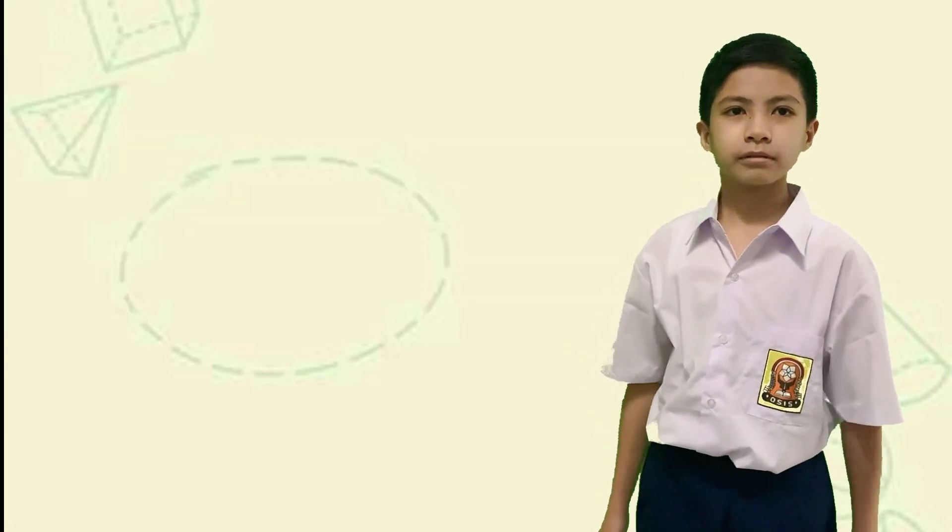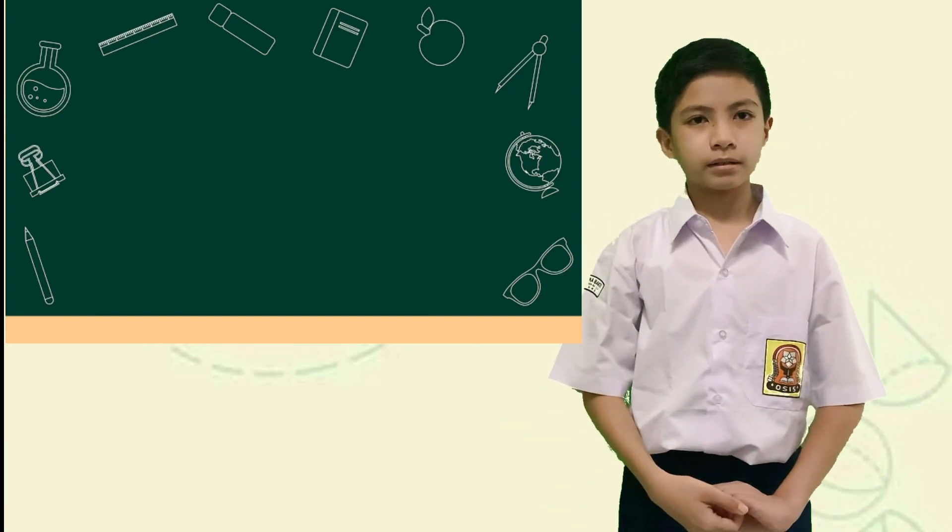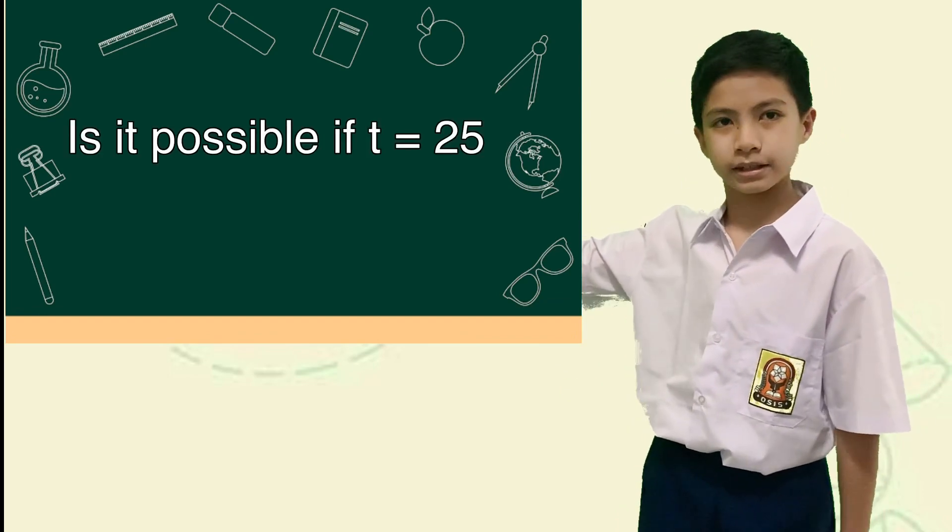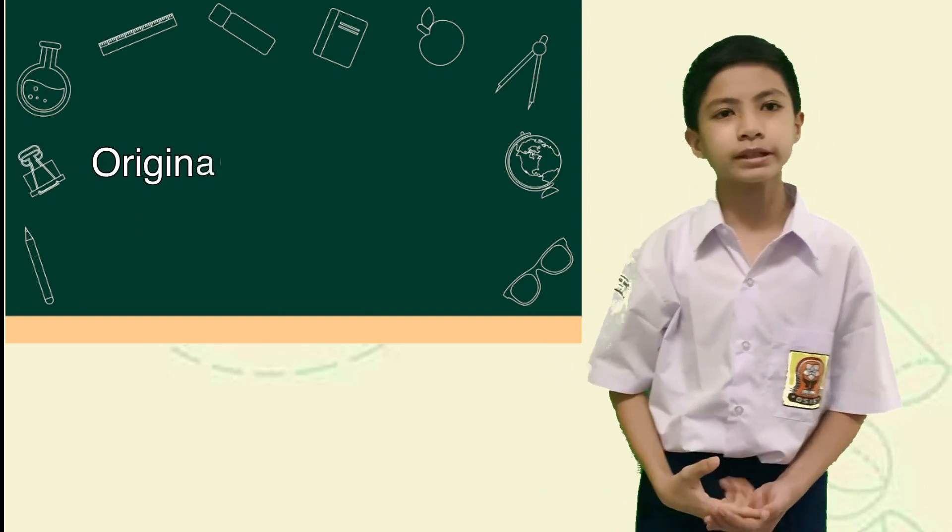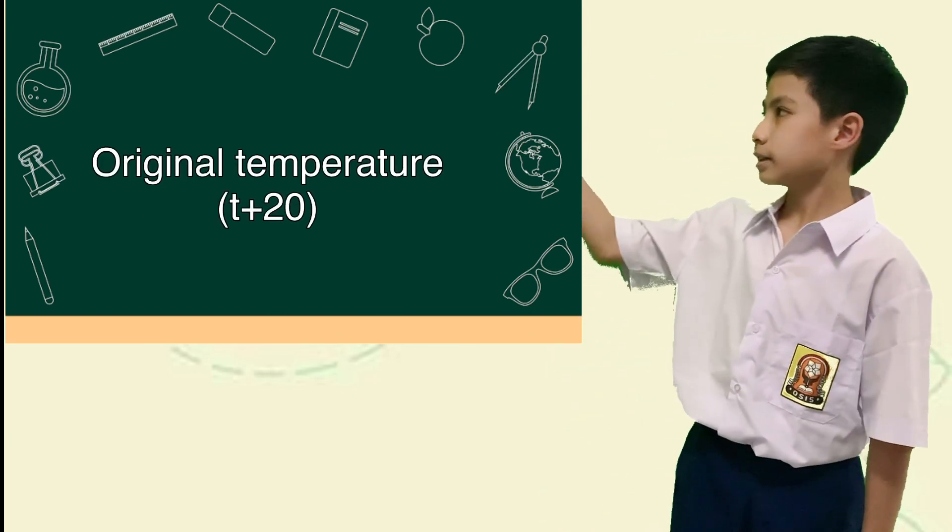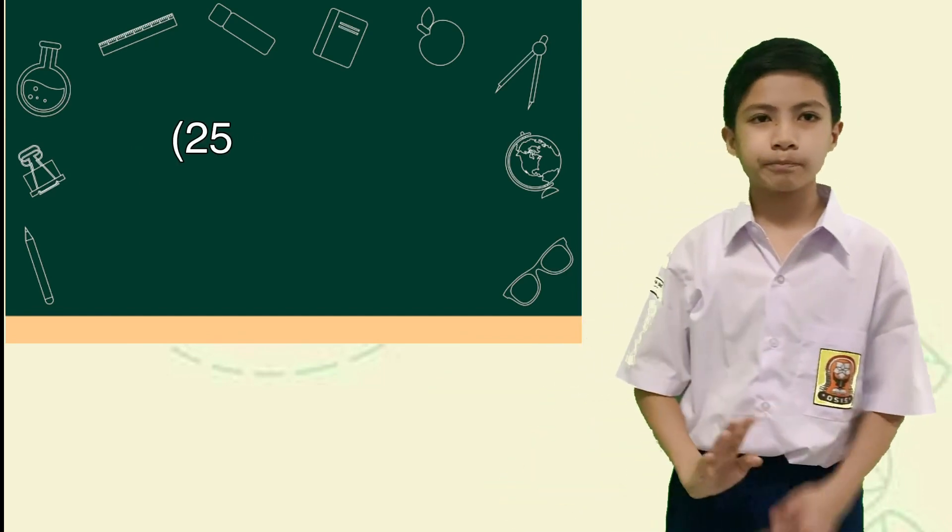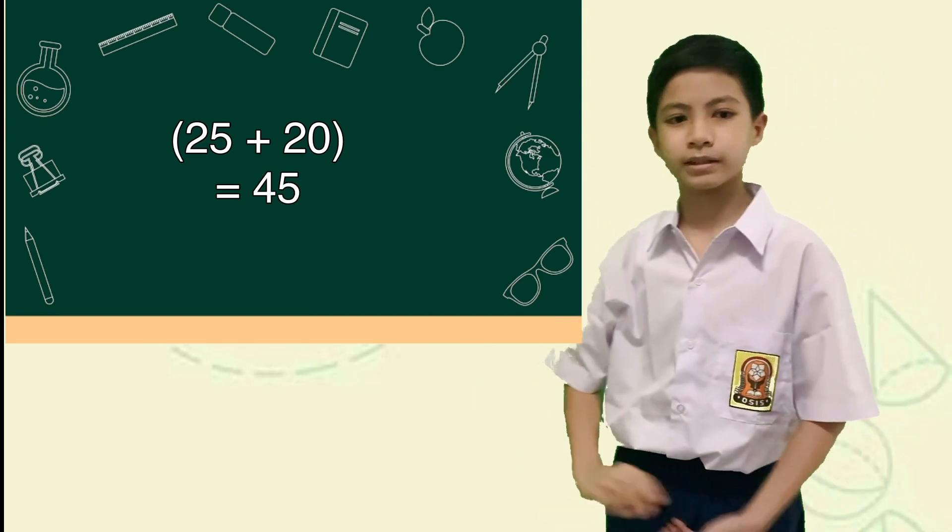Now, let's solve the last number. Let's start with the question, is it possible if T is 25 degrees Celsius? Let's start with the original temperature, which is T plus 20 degrees Celsius, which means 25 plus 20 degrees Celsius equals 45 degrees Celsius.